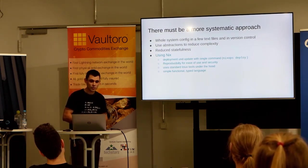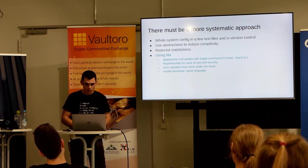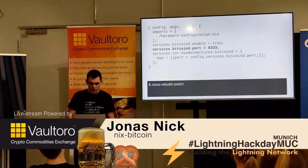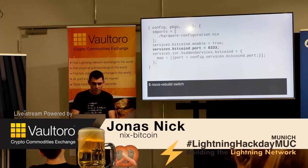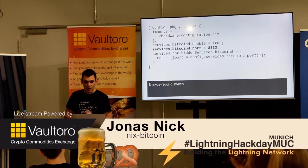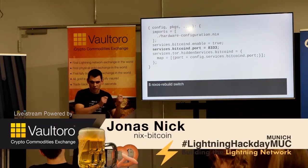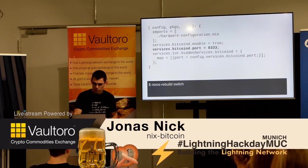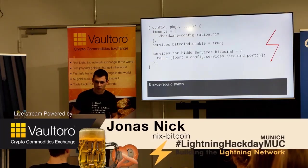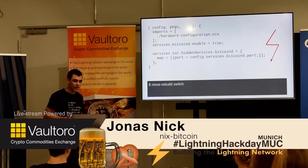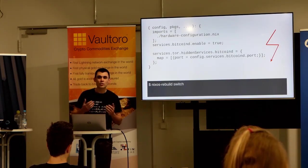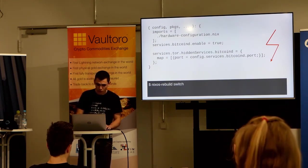Using Nix helps because you can do deployments and updates with a single command. You have reproducibility for ease of use and security. It uses standard Linux tools like systemd services under the hood, and it uses a simple functional type language. The Bitcoin D port is defined as being either null or an integer, and if we don't specify it — this actually happened to me — Nix would immediately notice that this doesn't work, because the Tor hidden service requires an integer but in this case it's null. So Nix says this cannot work and we notice problems very early on, without having to go to log files.